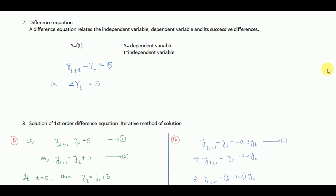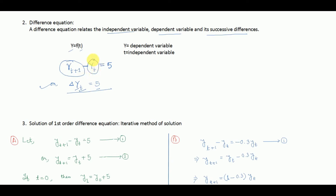Let us assume y is the dependent variable and t is the independent variable. This equation relates independent variable t, dependent variable y, and their successive differences, because the value of y in period t+1 and the value of y in time period t gives a difference equal to 5. This is an example of a difference equation, and more specifically, a first order difference equation.